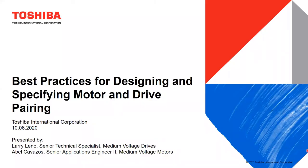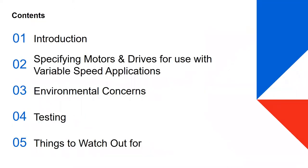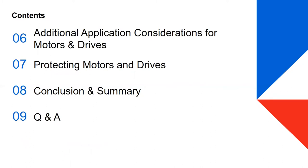Best Practices for Designing and Specifying Motor and Drive Pairing. Topics include: specifying motors and drives for use with variable speed applications, environmental concerns, testing, things to watch out for, additional application considerations for motors and drives, protecting motors and drives, and conclusion and summary.